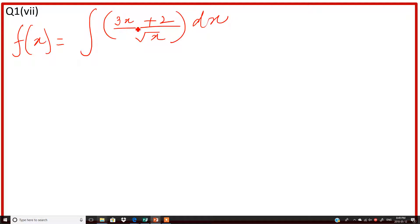This is 3x plus 2 divided by under root x. This under root x will divide 3x as well as 2 both, right?